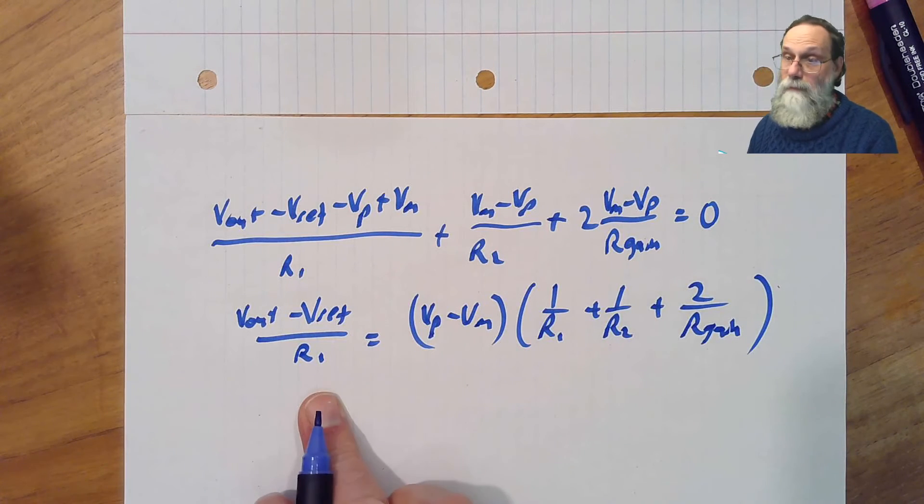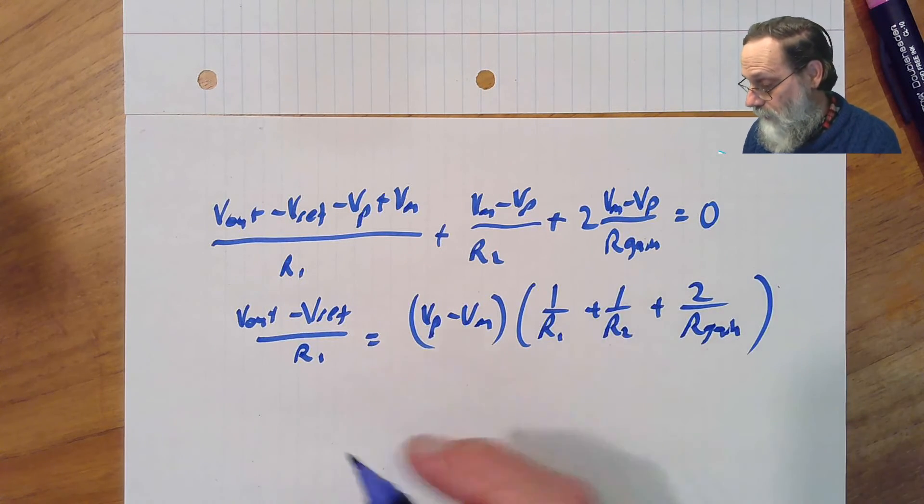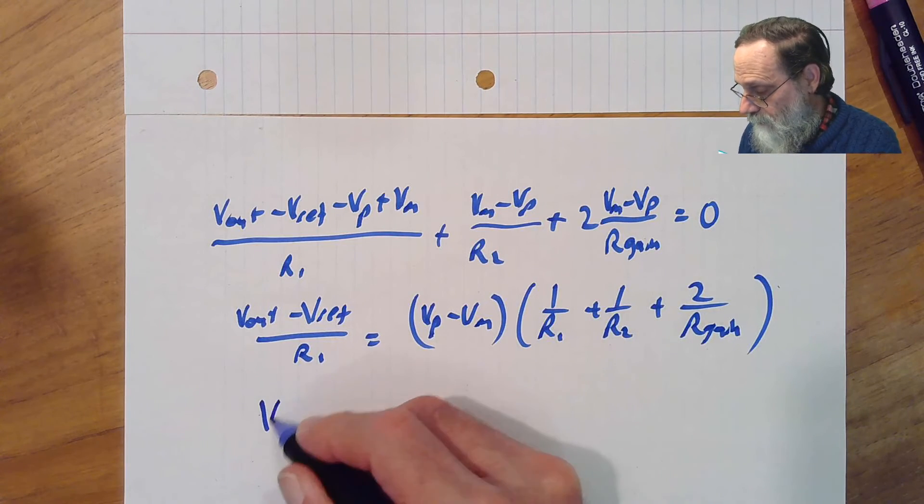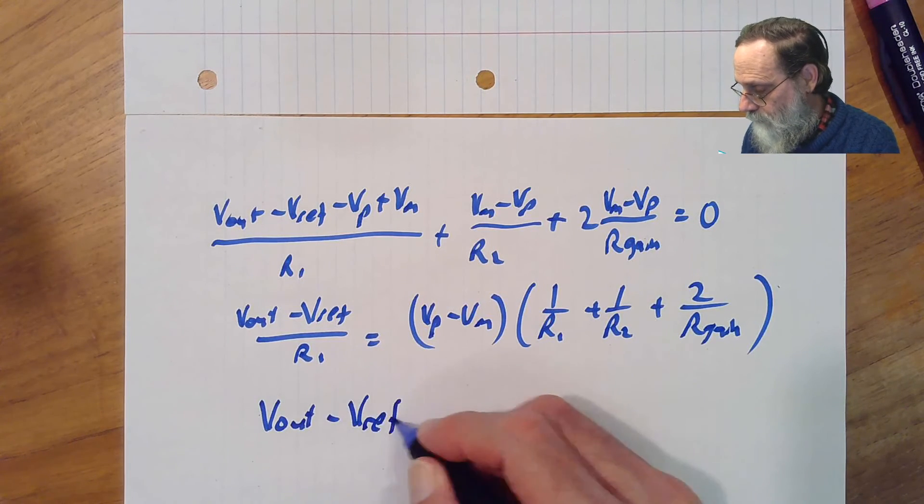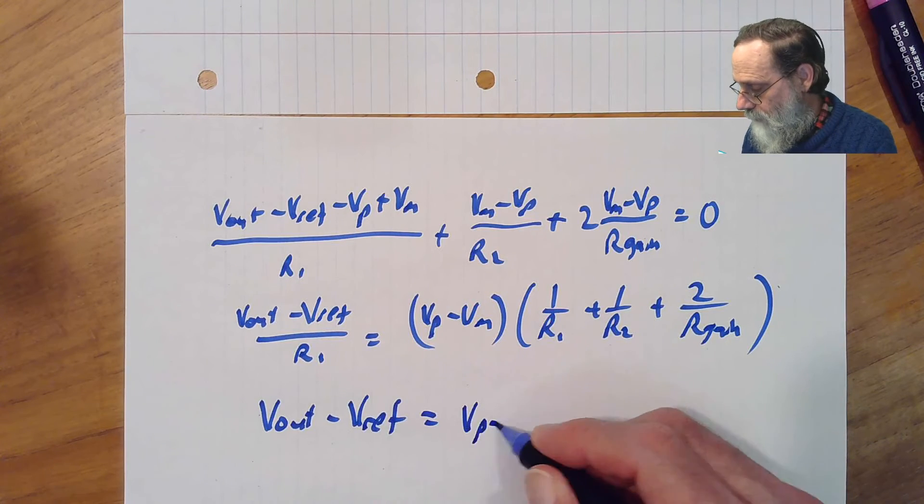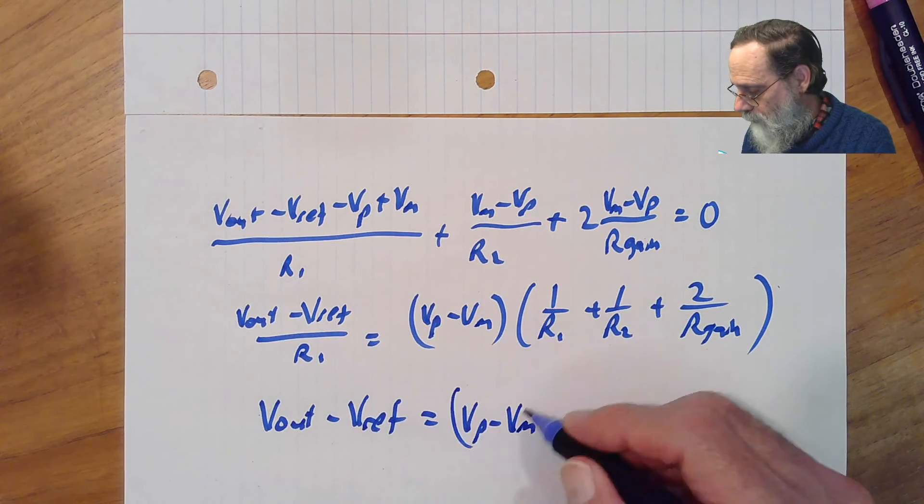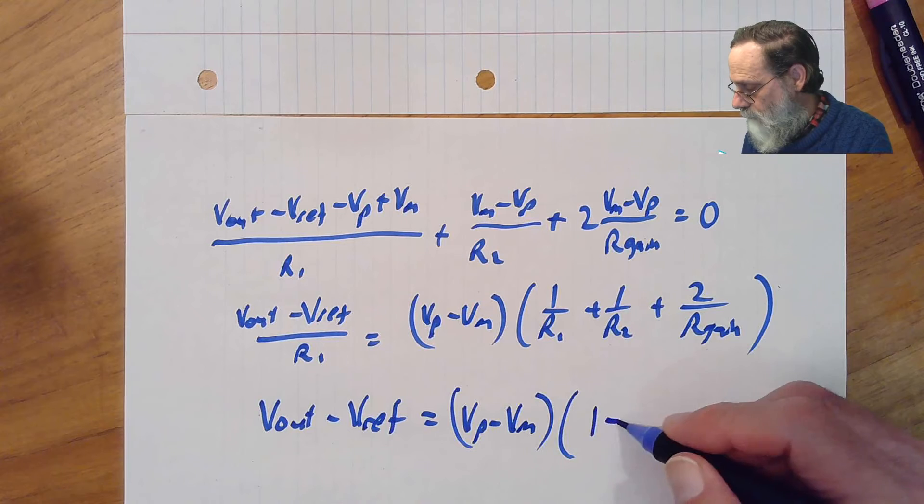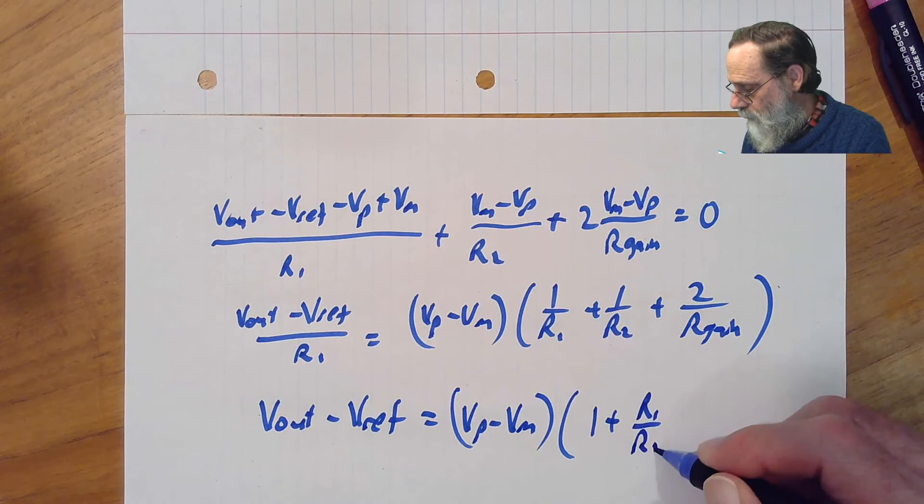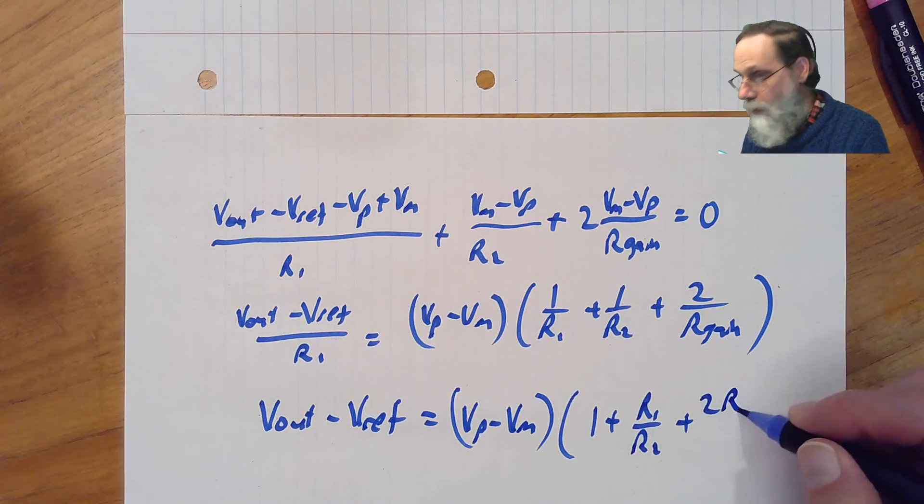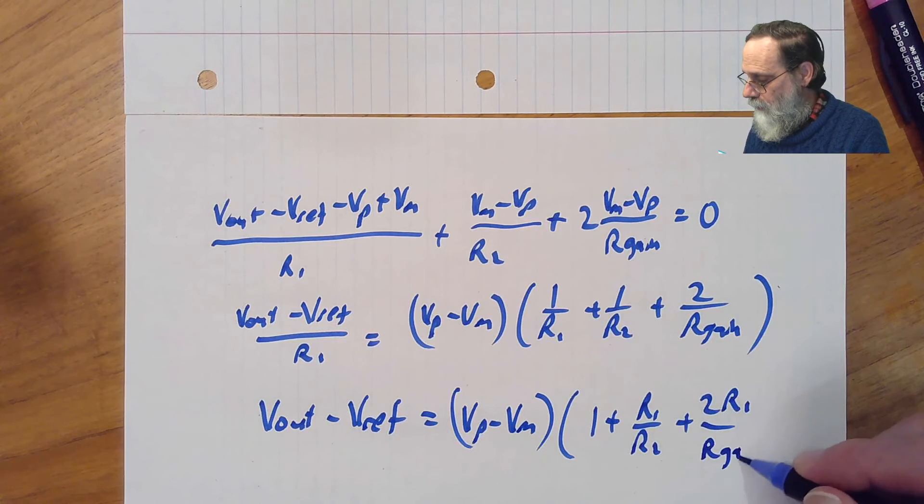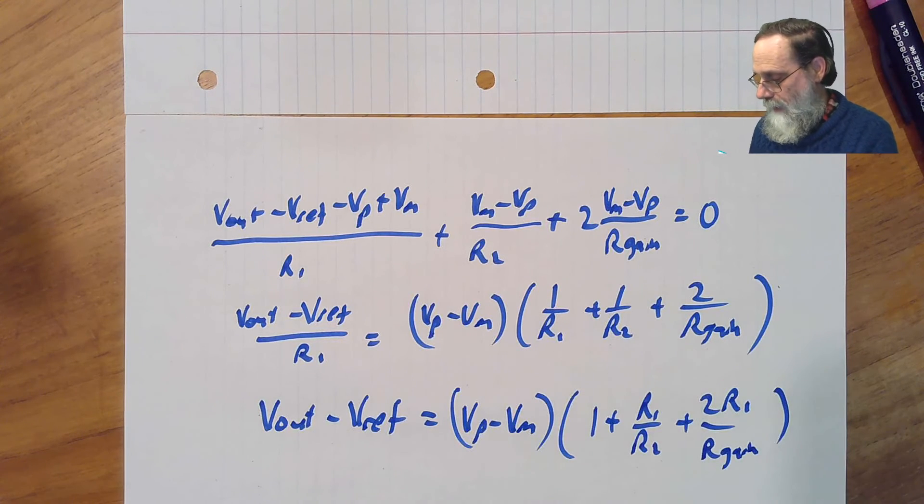And that is exactly the form we want for an instrumentation. And if we get rid of the r1 by multiplying both sides by that, vout minus vref is vp minus vm times 1 plus r1 over r2 plus 2 r1 over r gain.